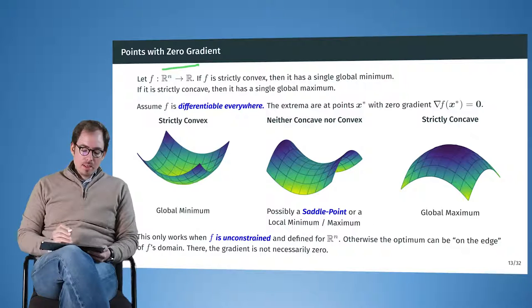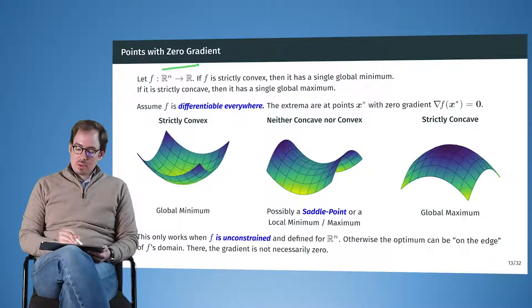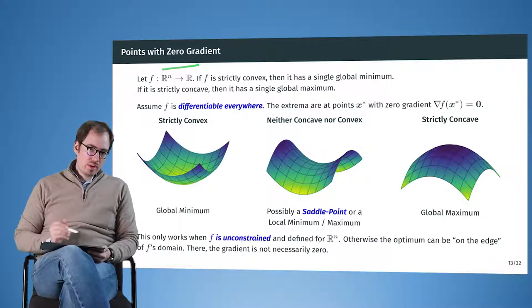and if it is unconstrained, and if it is strictly convex, then we know that it has a single global minimum. So there's only one point where the minimum is achieved.